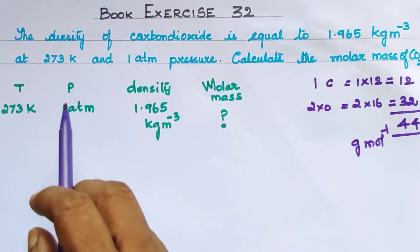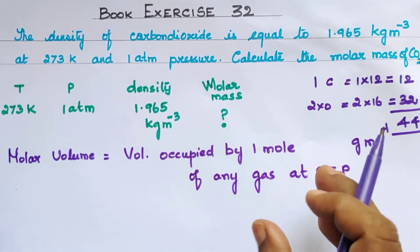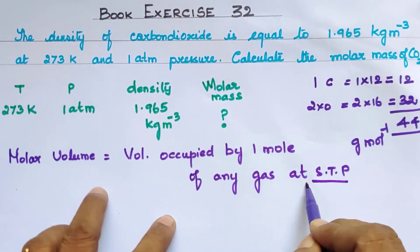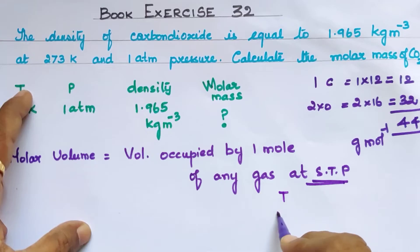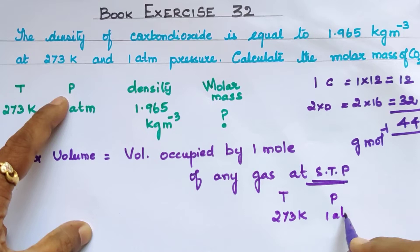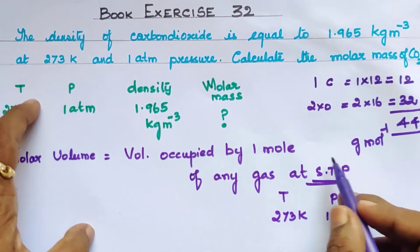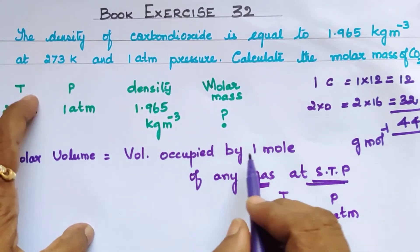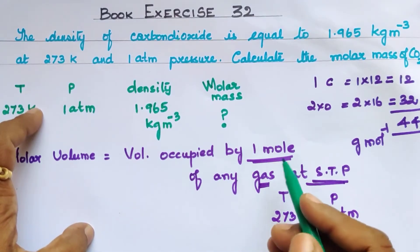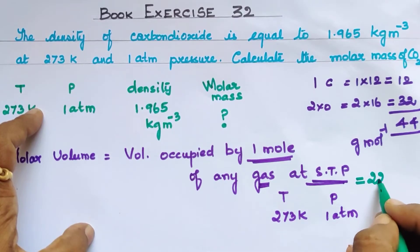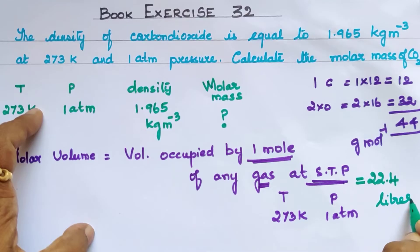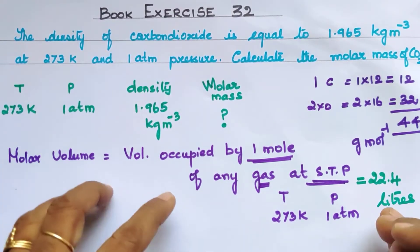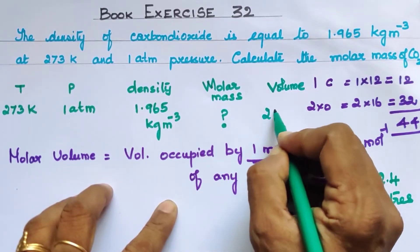Molar volume is the volume occupied by one mole of any gas at STP. The pressure is 1 atm, so this is an STP condition. Since carbon dioxide is a gas at STP, the volume occupied by one mole is 22.4 liters. So in these conditions, one mole of carbon dioxide will occupy a volume of 22.4 liters.